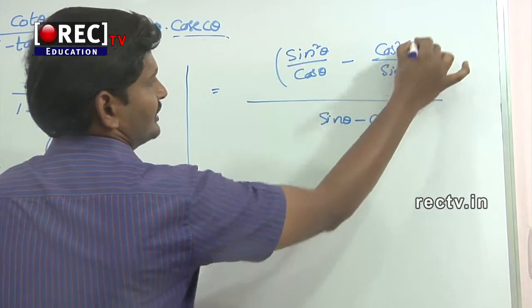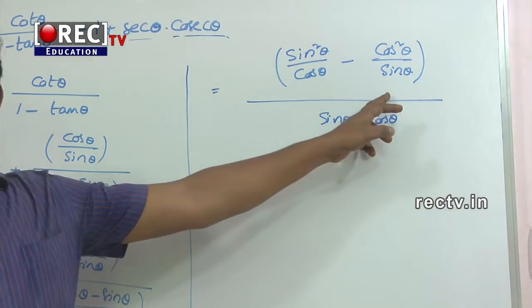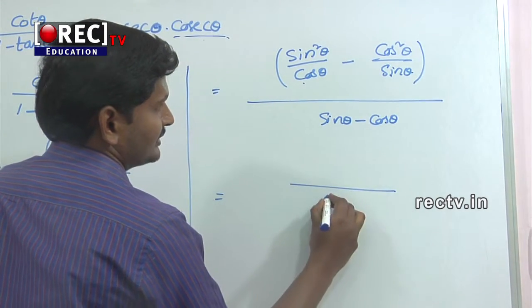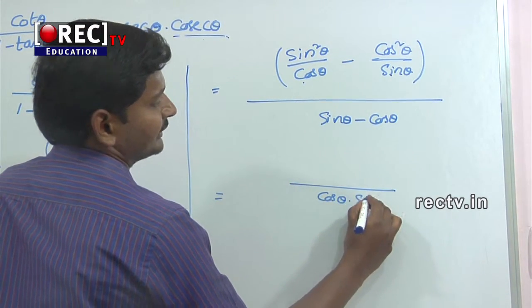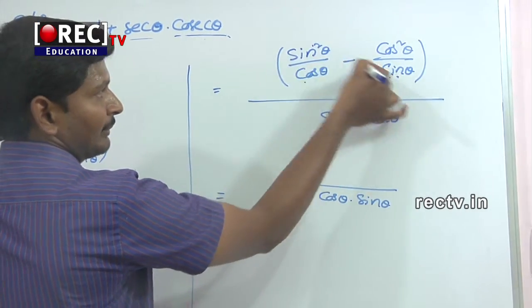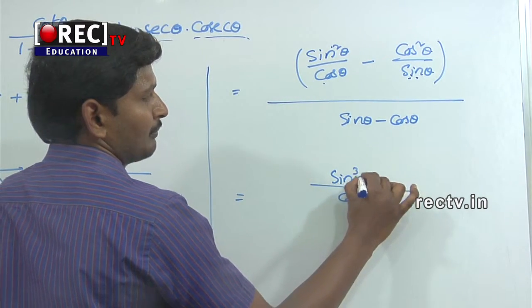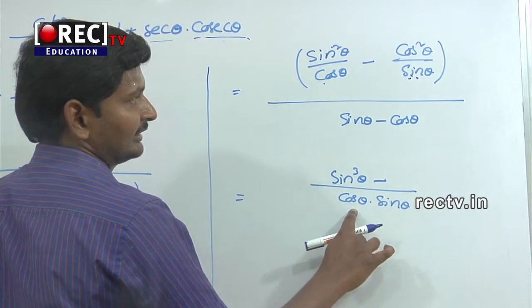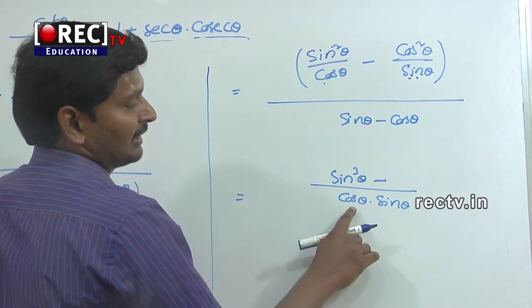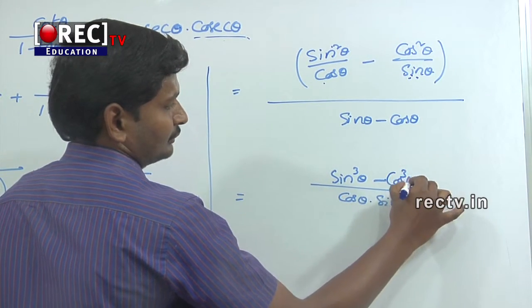Now take LCM for the numerator. The LCM is cos θ into sin θ. Multiplying through: sin θ into sin² θ gives sin³ θ, and cos θ into cos² θ gives cos³ θ. So the numerator becomes sin³ θ minus cos³ θ.